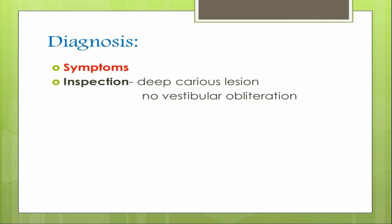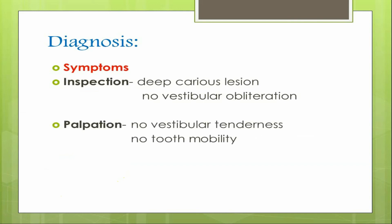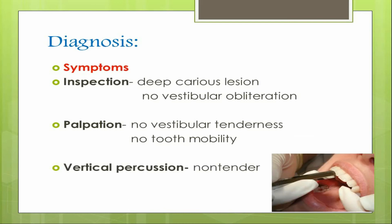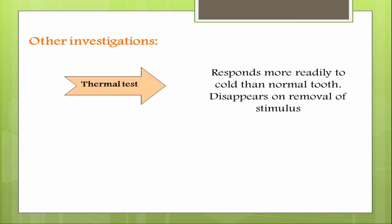Diagnosis can easily be made from the patient's symptoms. On clinical examination, upon inspection you may see a deep carious lesion with no vestibular obliteration. When you palpate the tooth there will be no tooth mobility and no vestibular tenderness. Upon vertical percussion the tooth will be non-tender.